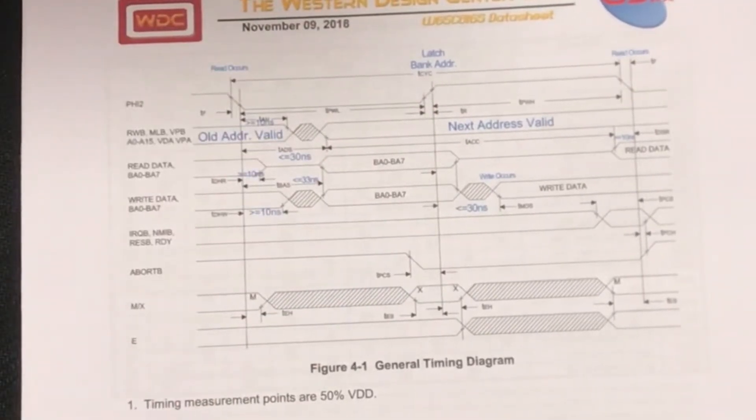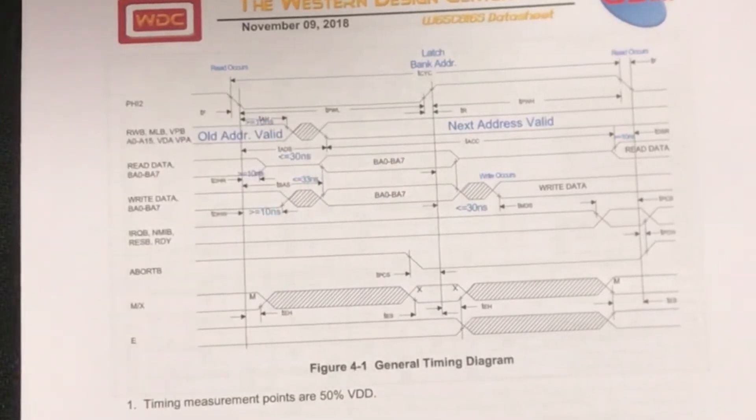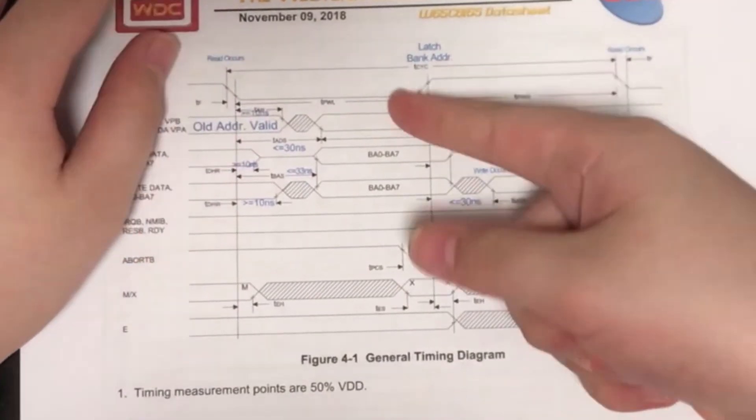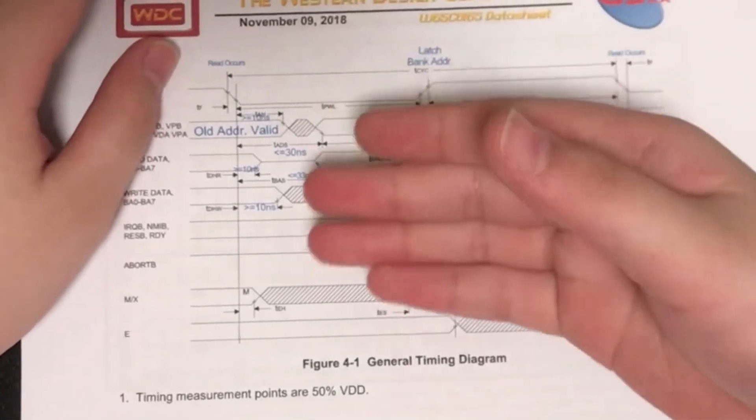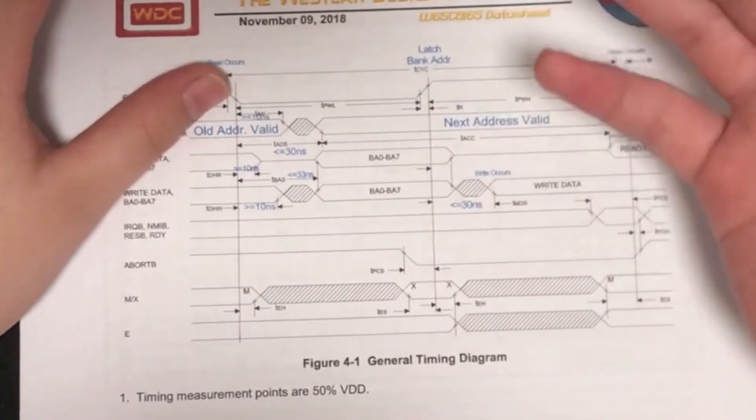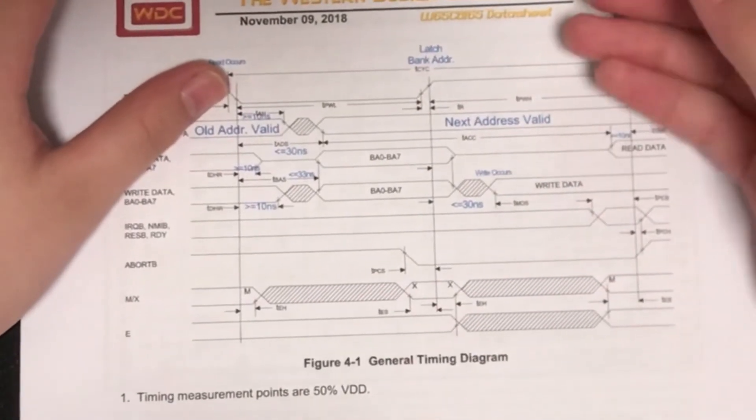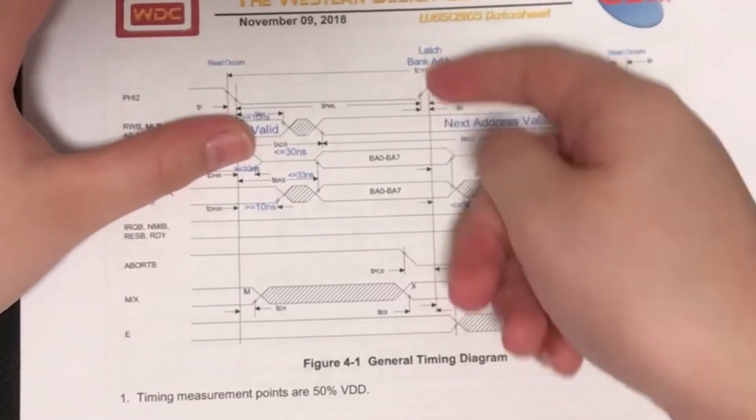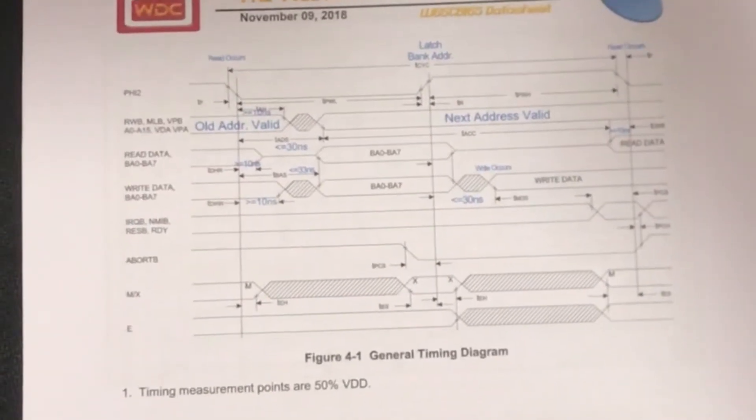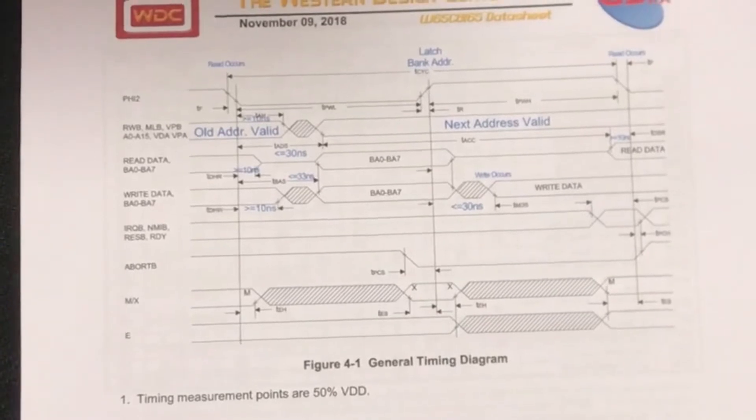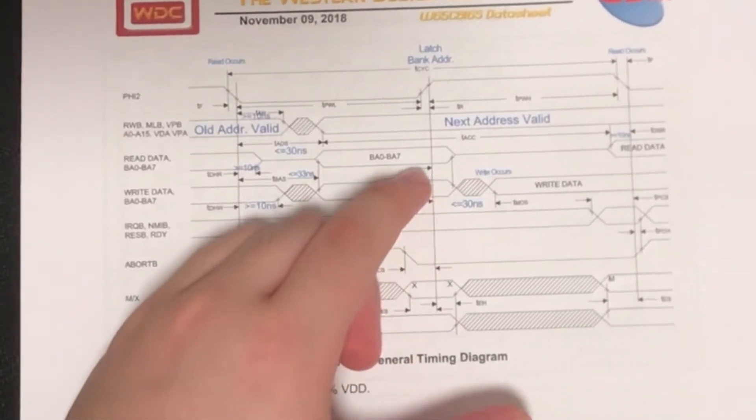We could actually have two separate chips here. We can use a 574, which is an octal latch, to latch the bank address. And then we could use a 74LS245 and we could connect its output to the inverter clock. Why? Well, look at this. When the clock goes high, the data needs to be able to pass through from the microprocessor to other peripherals. So we can just do that by inverting the clock here. That's because the output enable of the 74LS245 is inverted. So that will match perfectly with this.